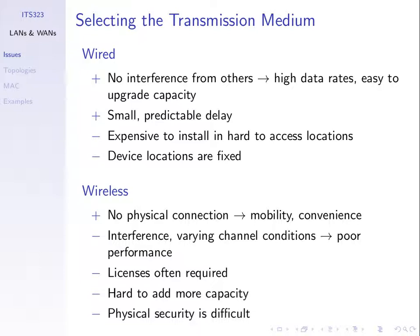Wired versus wireless — which one's better? There are advantages and disadvantages of each. With wired, when we transmit a signal across a wire or fibre, that signal is contained inside the conductor, so there's very little interference. The result is that we can generally achieve very high data rates.